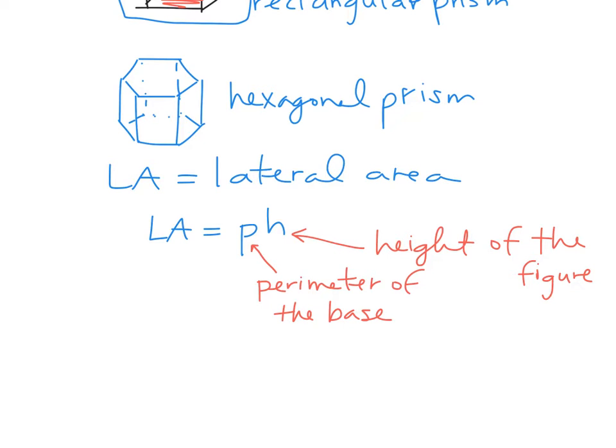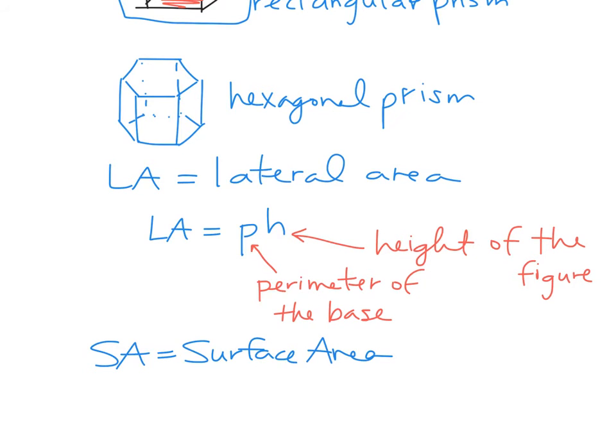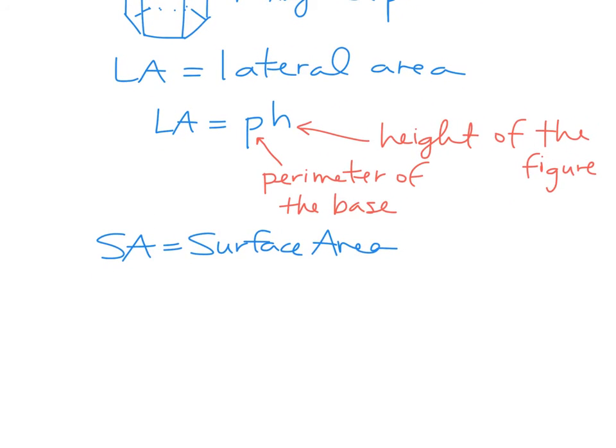So LA equals P-H is the formula you're going to use for lateral area. The formula you're going to use for surface area. So SA stands for surface area. And the beautiful thing about the surface area formula is it uses the lateral area that we already have. So whatever you find for the lateral area, you just plug that number in, LA, plus 2, and then times a capital B. And that capital B stands for the area of the base.